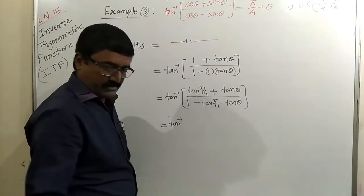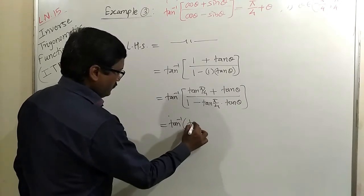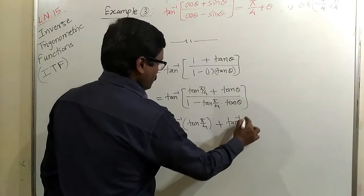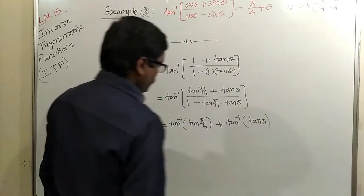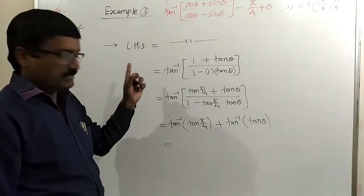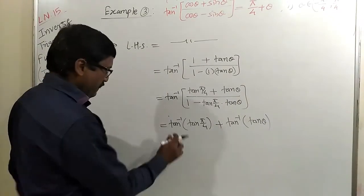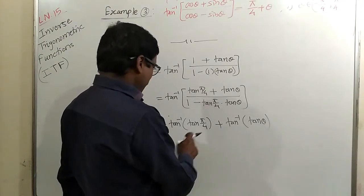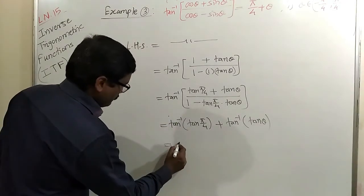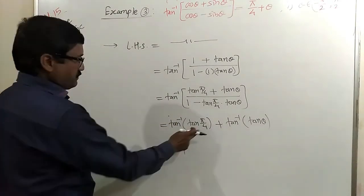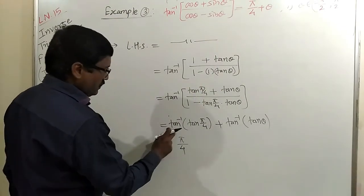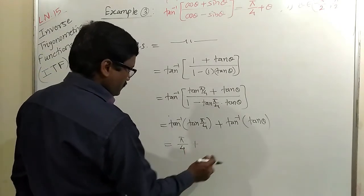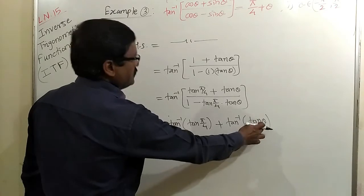Therefore, we can write this as tan⁻¹(tan(π/4)) + tan⁻¹(tanθ). Using the formula, tan⁻¹ and tan cancel because π/4 belongs to the valid interval. So tan⁻¹(tanx) = x, and since θ also belongs to that interval, tan⁻¹(tanθ) = θ, giving us π/4 + θ, which equals the RHS.